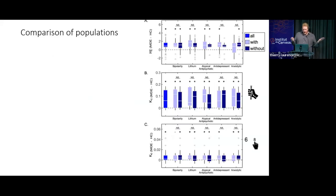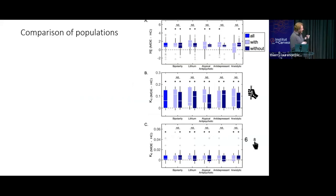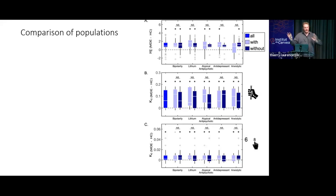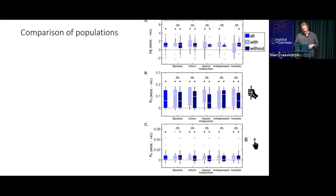Our group of patients was very heterogeneous — bipolar and unipolar patients with different kinds of treatment. To satisfy reviewers, we did subgroup analyses — the study was not designed to compare bipolar versus unipolar depression, but just to be sure, we compared only bipolar patients to controls, etc. Basically the result was present in all subgroups of patients. It was very robust and does not seem to be specific to one particular type of patient.